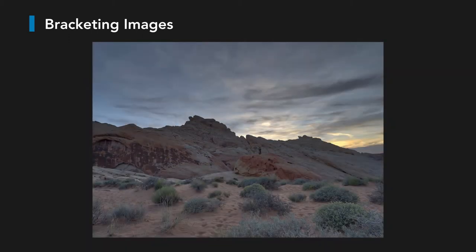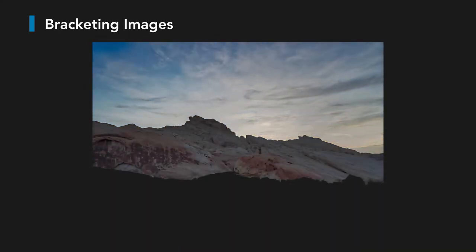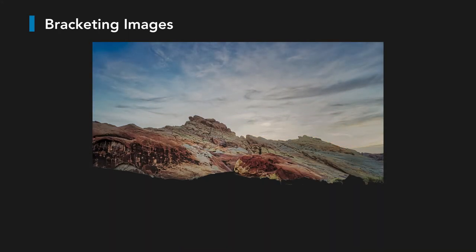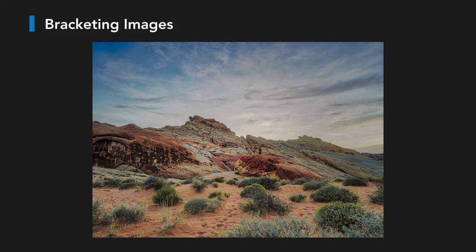In the old days, both in the darkroom and in early digital tools, people would look at parts of a photo, maybe latching onto the sky to pull that part out, and then developing the mountain one way and the foreground another way, and then compositing those images back together.